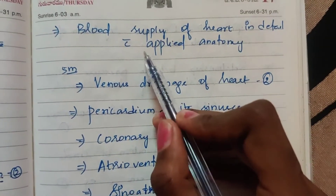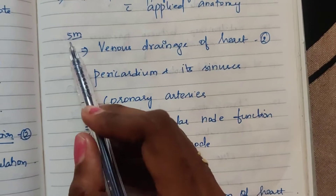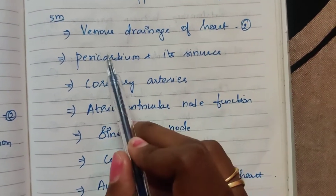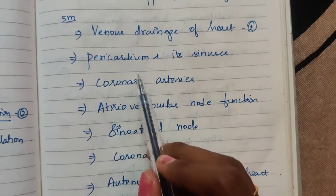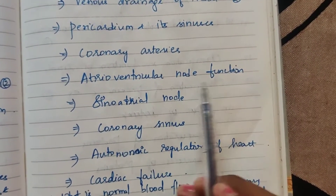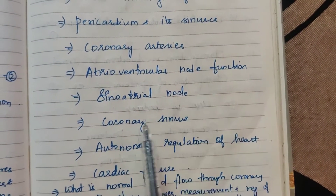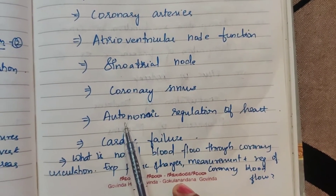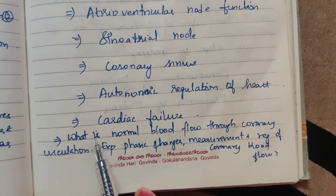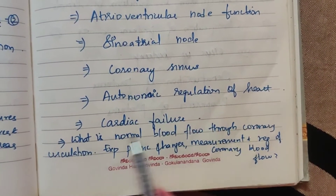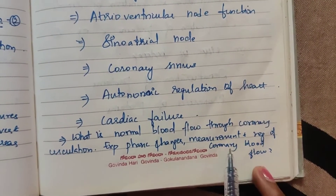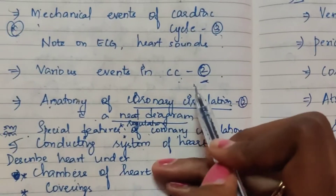Blood supply of heart in detail with applied anatomy. Venous drainage of heart — two times. Pericardium and its sinuses — one time. Coronary arteries — two times. Atrioventricular node function — two times. Sinoatrial node — two times. Coronary sinus — three times. Autonomic regulation of heart — four times. Cardiac failure. What is normal blood flow through coronary circulation? Explain phasic changes, measurement, and regulation of coronary blood flow — that is one time.